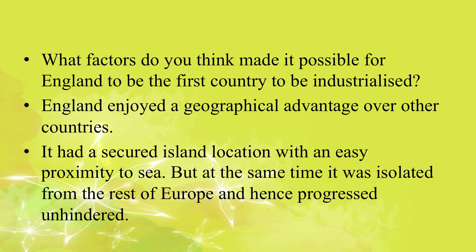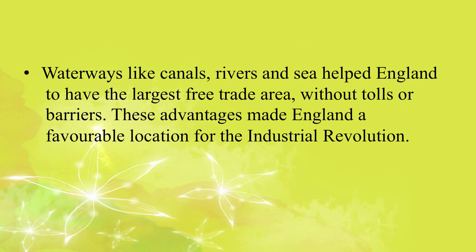England enjoyed a geographical advantage over other countries. It had a secured island location with easy proximity to sea, but at the same time was isolated from the rest of Europe and hence progressed unhindered. Waterways like canals, rivers, and sea helped England to have the largest free trade area without tolls or barriers. These advantages made England a favorable location for the Industrial Revolution.